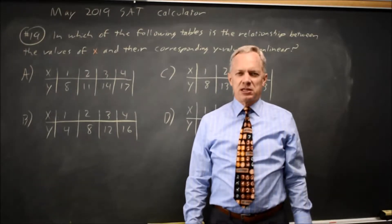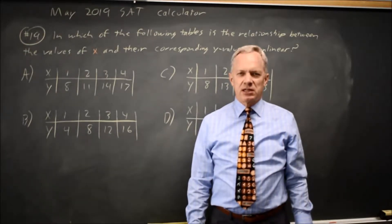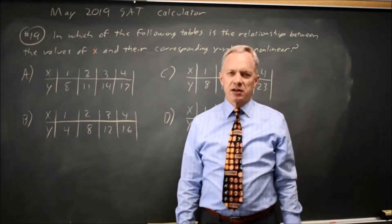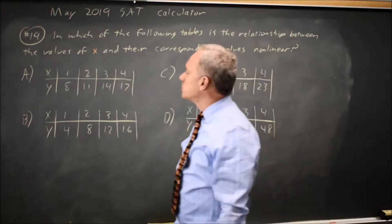This is calculator question number 19 from the May 2019 SAT. College Board is asking which of these tables gives a non-linear relationship. So let's take a look at the choices.